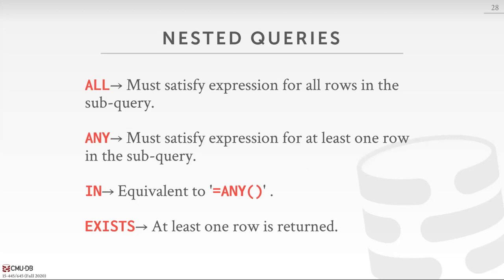There are several ways to operate on nested queries that produce multiple rows. ALL means all rows from the sub-query must satisfy your expression. ANY means at least one row must match. IN is basically equivalent to 'equals ANY.' EXISTS just checks that the inner query returns at least one record — it doesn't care what's in it. If at least one record is returned, the EXISTS predicate evaluates to true.